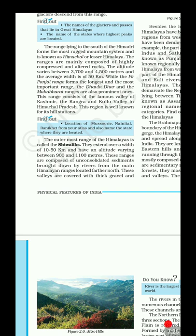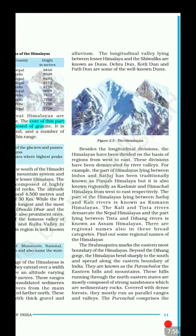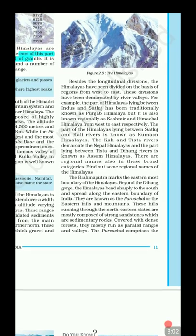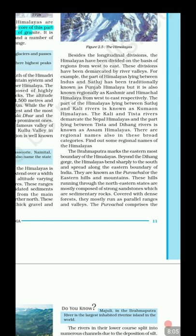The outermost range of the Himalayas is called the Shivaliks, roughly 20 to 50 km wide, with an altitude range of 900 to 1,100 meters, composed of unconsolidated sediments. The longitudinal valleys between the second range (Himachal) and the third range (Shivaliks) are known as Duns. Some important Duns are Dehradun, Patlidun, and Kotlidun.